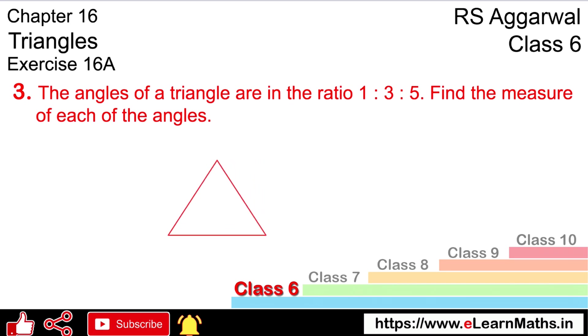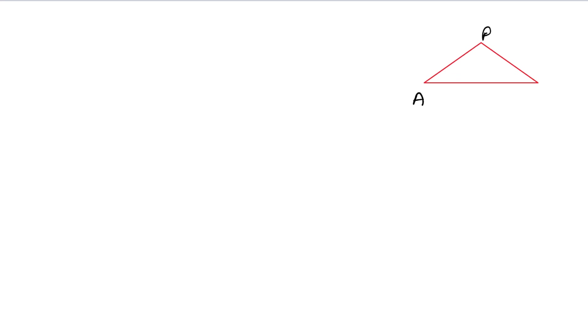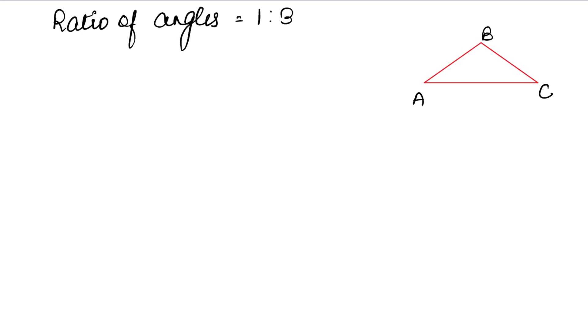This is a triangle. The angles are in the ratio 1 is to 3 is to 5. If this angle is 1, this is 3 and this is 5. This is just a triangle to explain — this will be a triangle and we will name it A, B and C. The ratio of angles is 1 is to 3 is to 5.